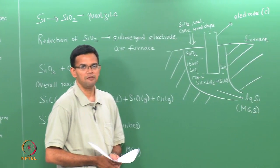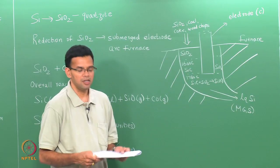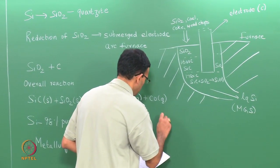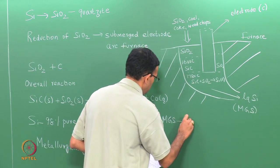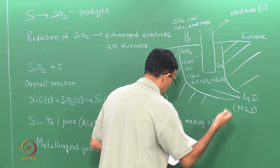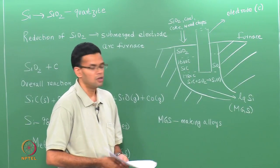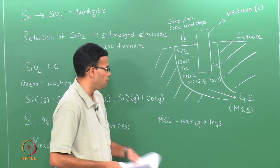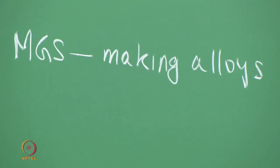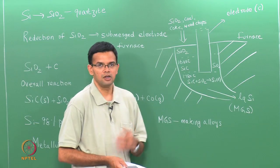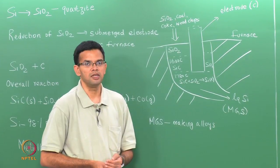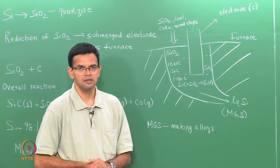Getting metallurgical grade silicon is the first step in manufacture of silicon wafers. MGS is also used for making alloys — for example, silicides made by combining silicon with metals such as platinum or aluminum. For making alloys, MGS with around 98% purity is sufficient. But in the case of IC manufacturing, we want impurity levels of the order of parts per billion, so this metallurgical grade silicon must be further purified.